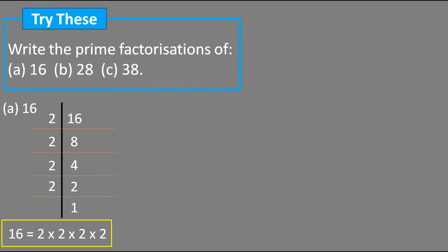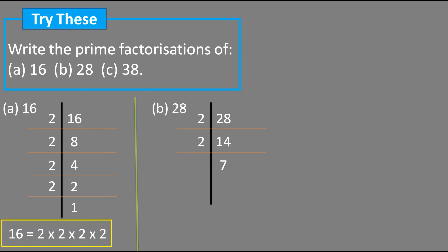Next number is 28. Since 28 is even, we divide by 2. Working through: 2 times 1 is 2, move to 8, 2 times 4 is 8, giving 14, which is also even. Divide by 2: 2 times 7 is 14, giving 7. Since 7 is a prime number, we divide 7 by 7 itself — 7 times 1 is 7. So the prime factorization of 28 is 2 into 2 into 7.